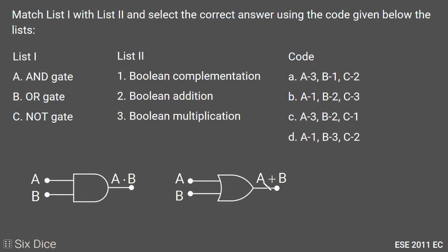OR gate's output will be A plus B, so it is Boolean addition. And NOT gate's output is A complement.